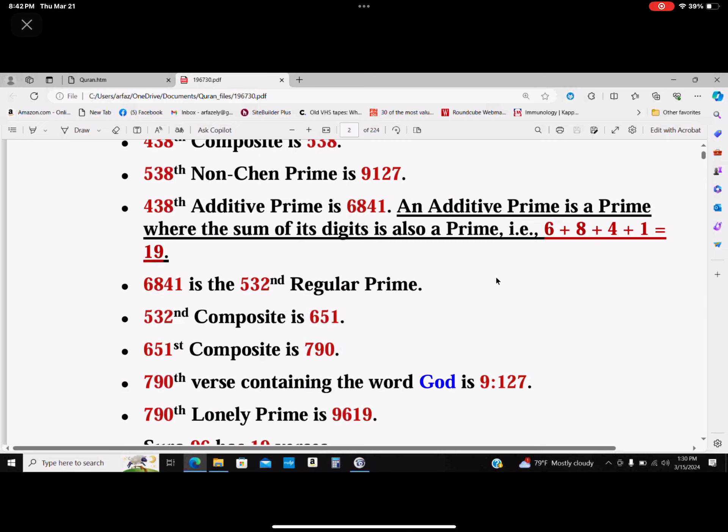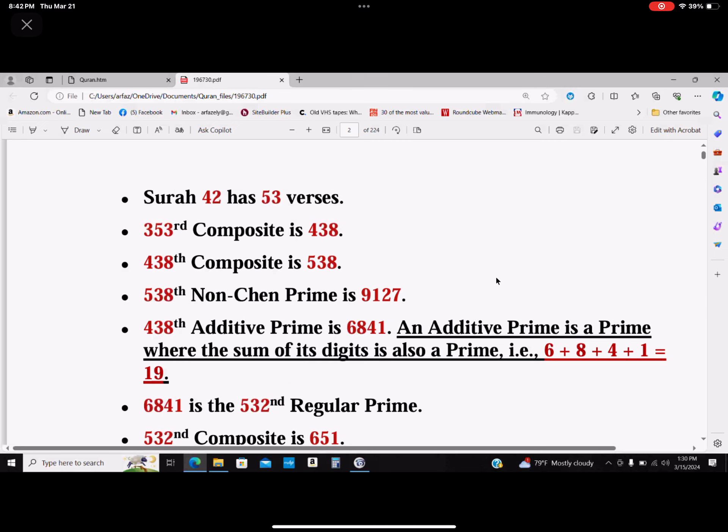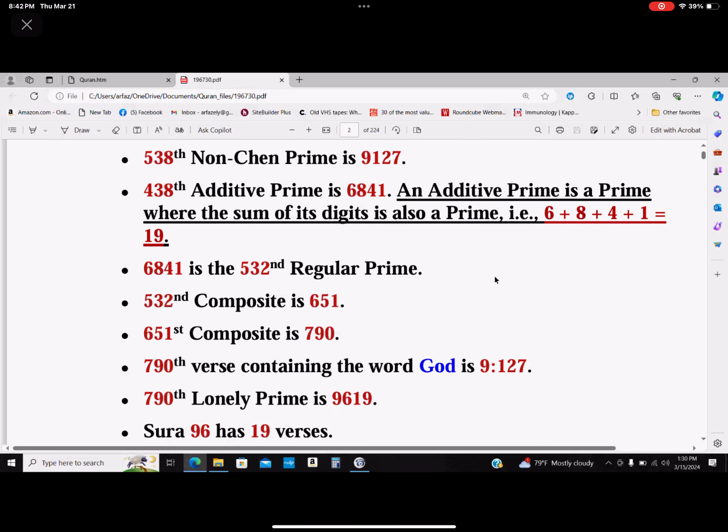You see how we went from 353 to 96:19 and 9:127. What is he trying to tell you? He's trying to tell you: do you have any argument with 96 having 19 verses? No sir. Do you have any problem with chapter 42 having 53 verses? No sir. If those are true, then 9 has 127 verses. It can't have anything else. That's what God is trying to tell us.